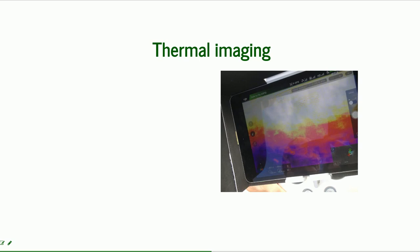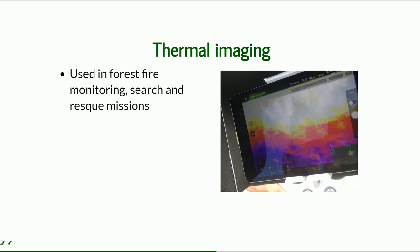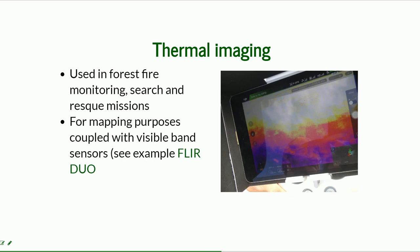Thermal imaging is used mostly for monitoring, search and rescue missions, forest fire monitoring, and structural inspections. For mapping purposes, it can be coupled with visible band sensors — you can see an example of this solution here. Because surfaces cannot be easily reconstructed from thermal imagery alone, thermal information can be wrapped over a surface reconstructed with visible band sensors, creating a thermal map.